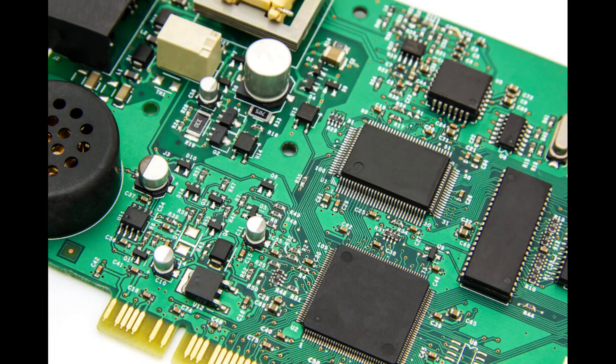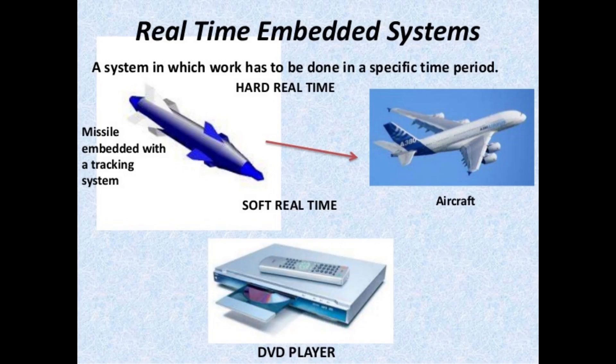Hardware: Embedded systems consist of hardware components designed specifically for the task they are intended to perform. This hardware can include microcontrollers, microprocessors, sensors, actuators, memory devices, communication interfaces, and power management circuits. The selection and integration of these hardware components are crucial in ensuring the system meets its requirements efficiently and reliably.